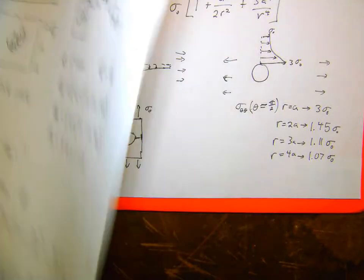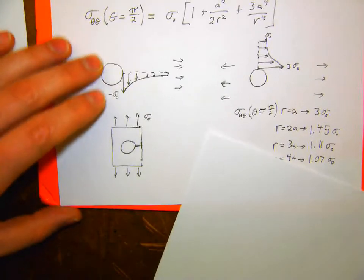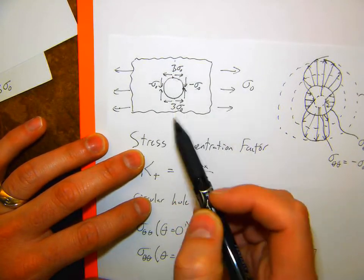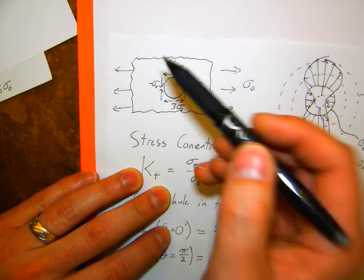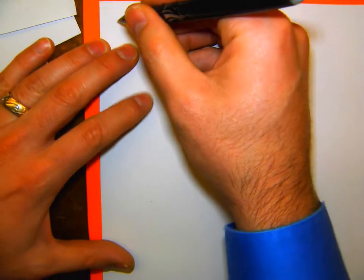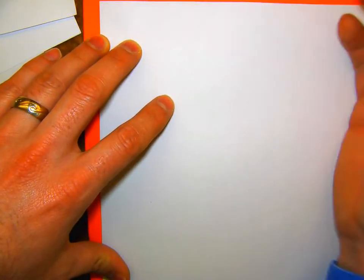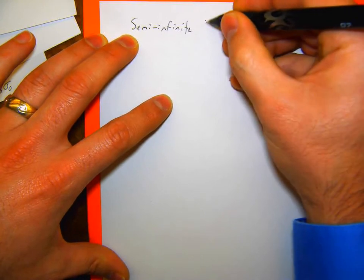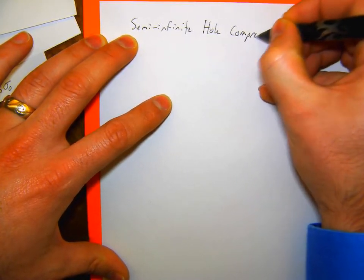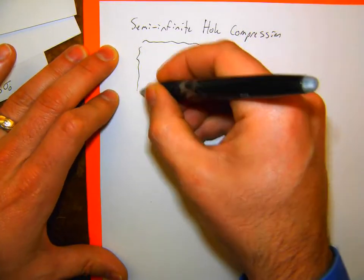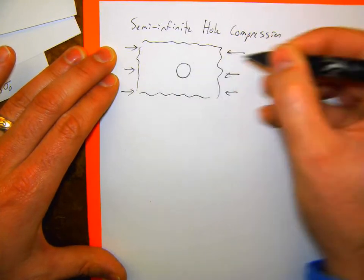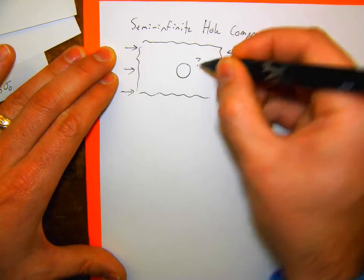Now I have some extension questions. First: I gave you the solution for a stress concentration around a hole in tension in a semi-infinite plate. What are the stress concentrations around a hole for a semi-infinite plate in compression? So I still have that large plate, except now I'm applying a compressive stress. What are the stresses around that edge of the hole?